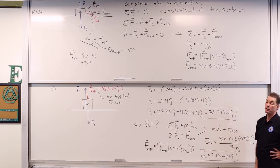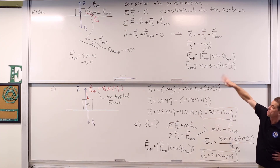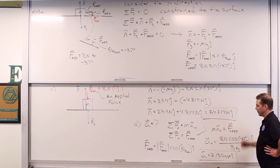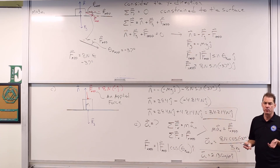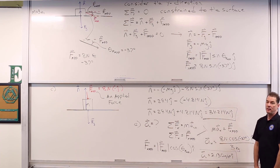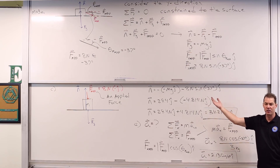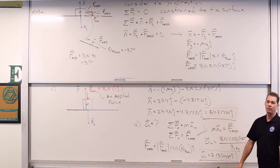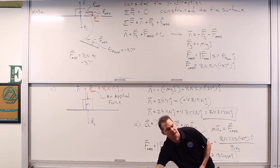The overall acceleration is 2.13 meters per second squared in the positive I hat direction, because the only non-zero component is in the x direction — all y components cancel out. The key takeaway: normal force can change; it's not just mg. It depends on what other forces are acting. Breaking things into x and y components is extremely important, especially with objects on horizontal surfaces where the net force in the y direction must equal zero.